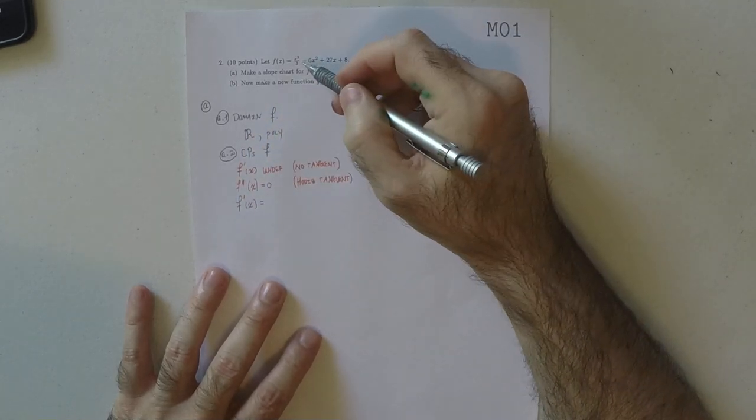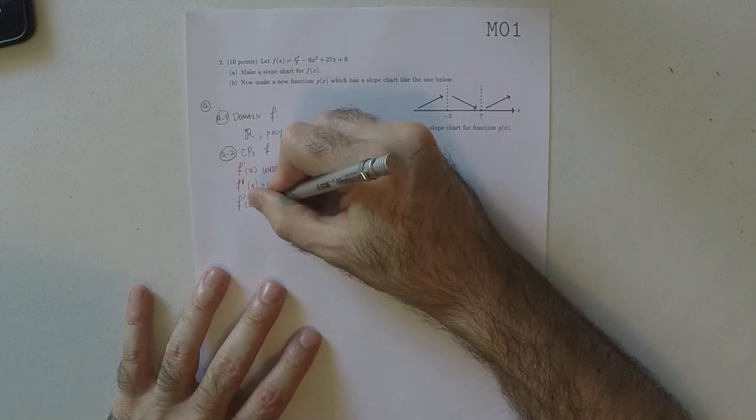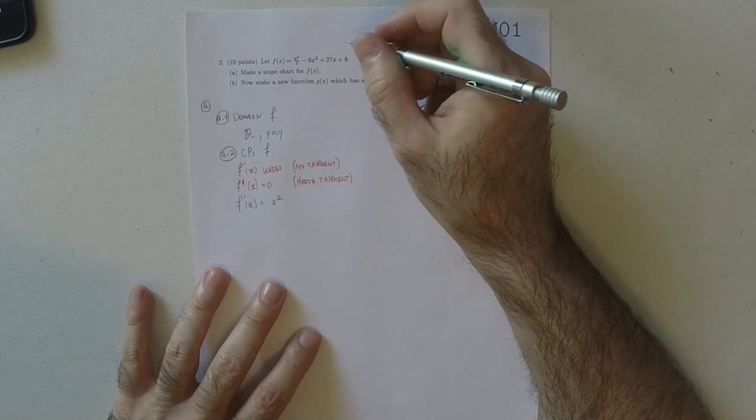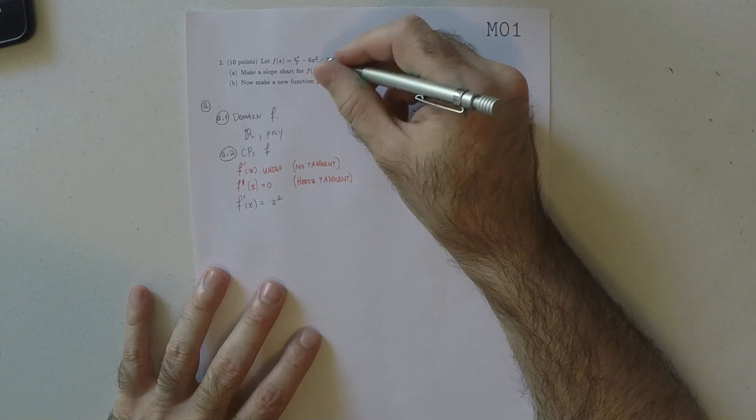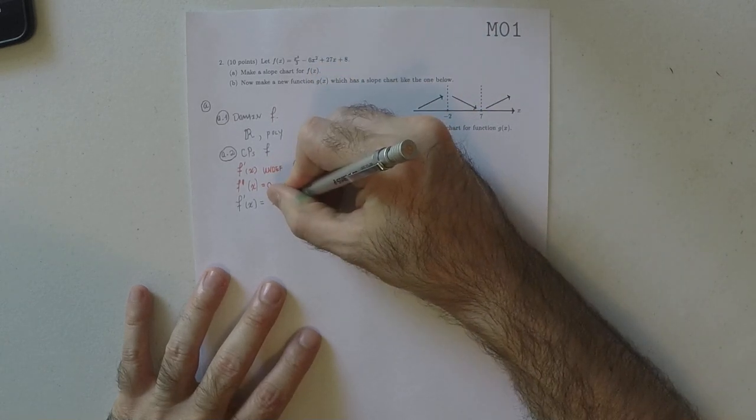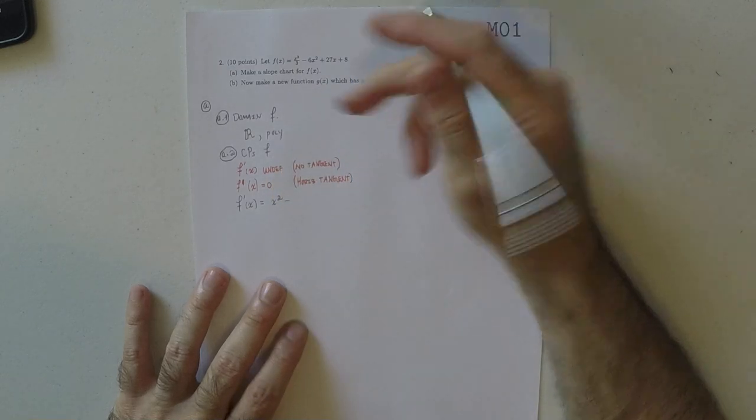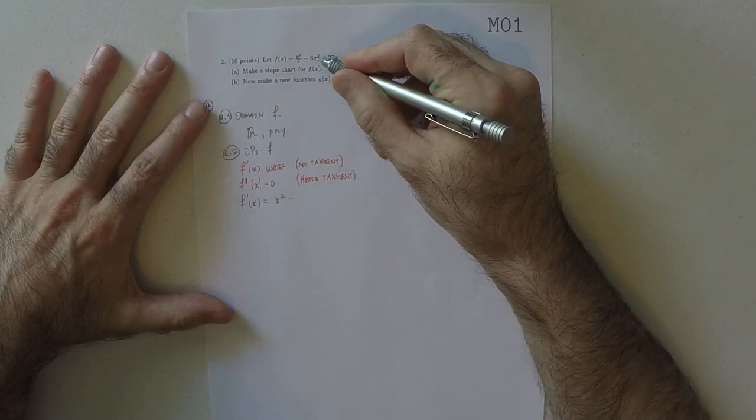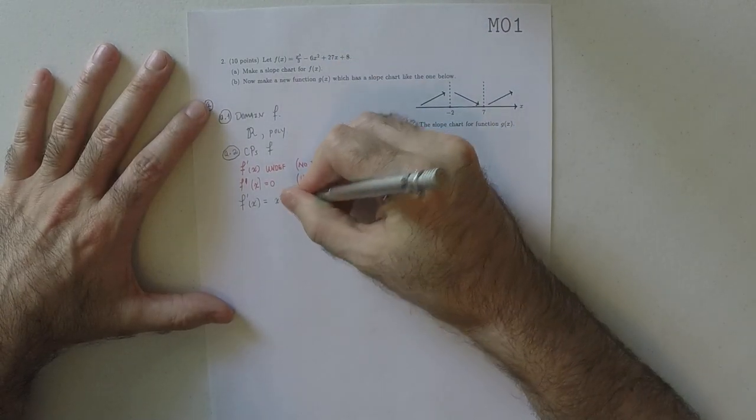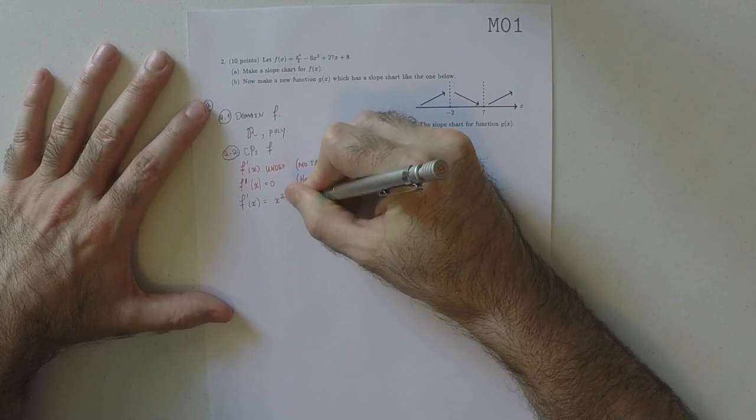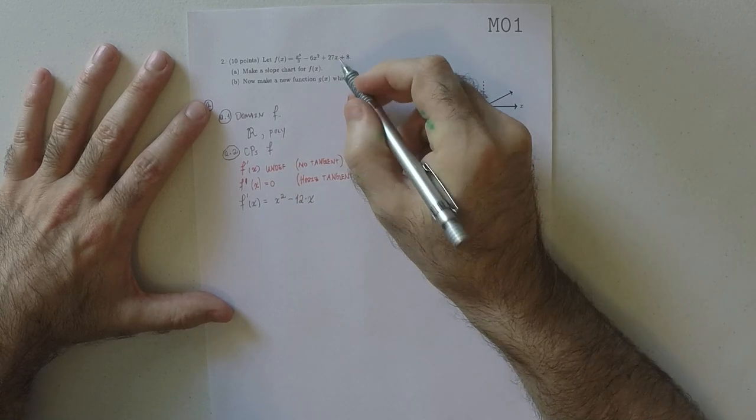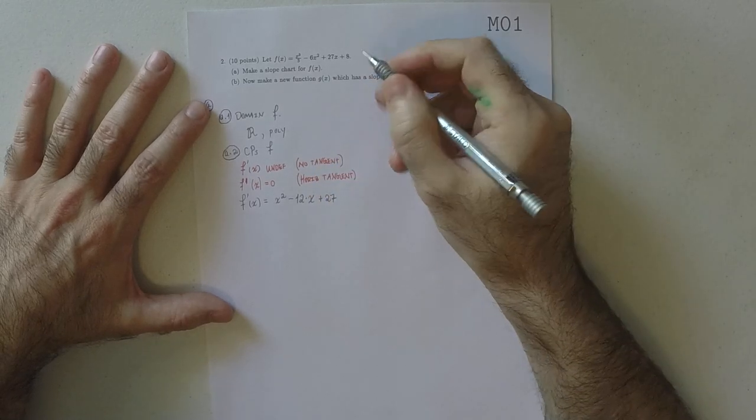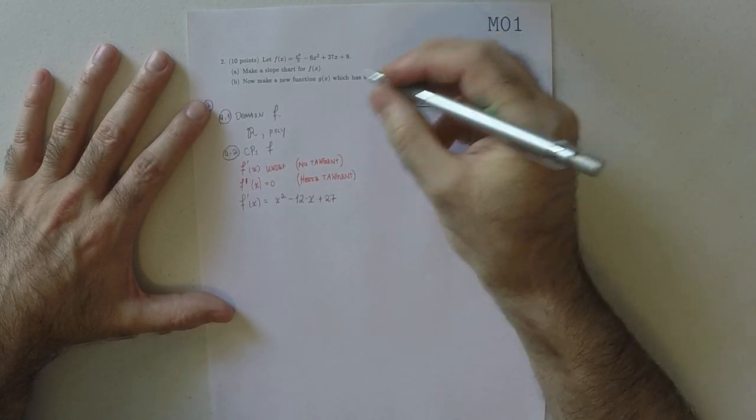So the derivative of F, well, the derivative of x cubed over 3 is x squared, and the derivative of 6x squared is 12x, and the derivative of 27x is 27. And then the derivative of 8 is just zero.